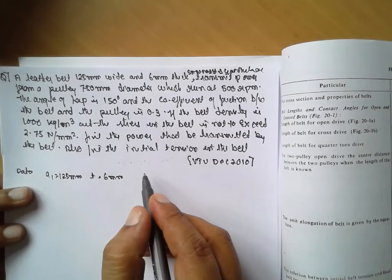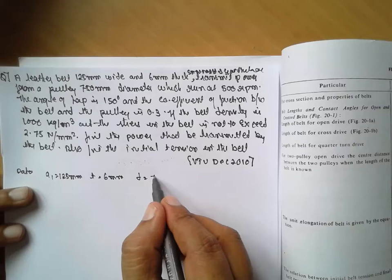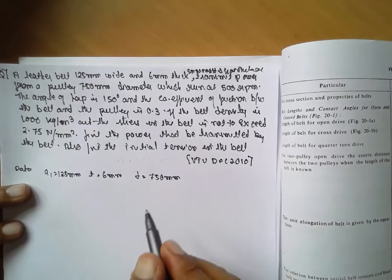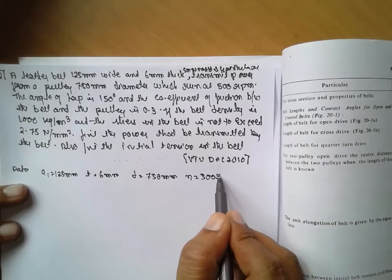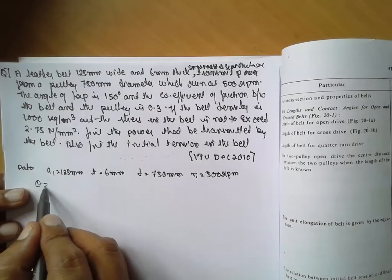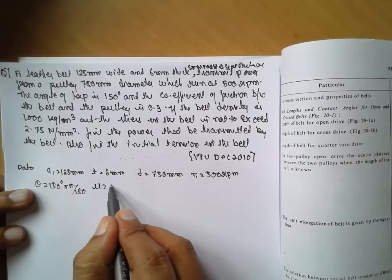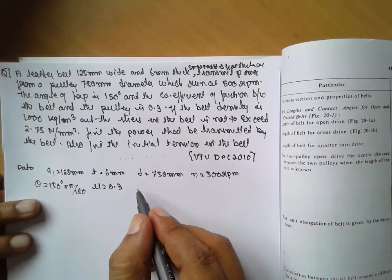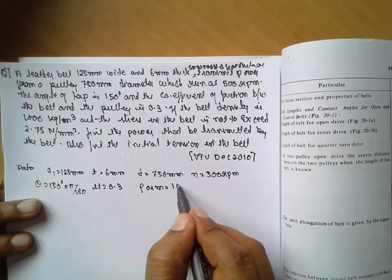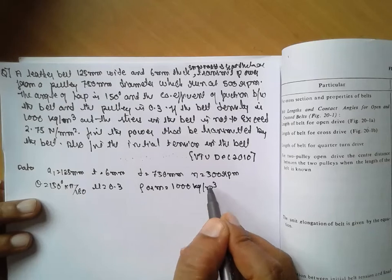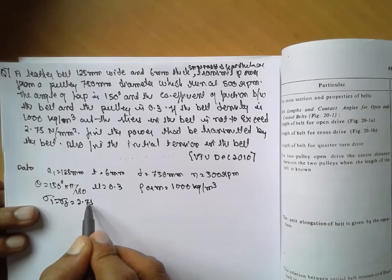Power is transmitted from a pulley of diameter d1. The RPM N is given as 500 rpm. Angle of lap theta is given as 150 degrees — you have to convert into radians using pi by 180. Coefficient of friction mu is equal to 0.3. Belt density rho is equal to 1000 kg per meter cube. The stress is not to exceed sigma d equal to 2.75 N per mm square.